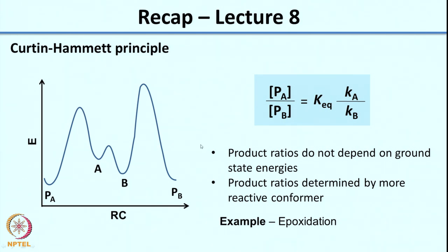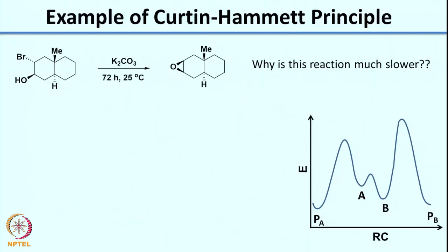It is mainly kinetics-driven. We had looked at the example of the epoxidation reaction, and before the end of the class I had given you a problem and asked you to think about why this reaction is much slower than the reaction where you have Br coming up and OH going down, which we had discussed in the previous class.